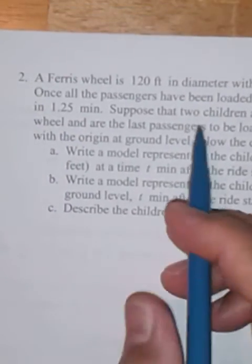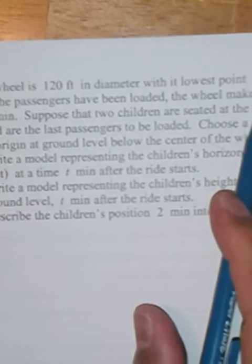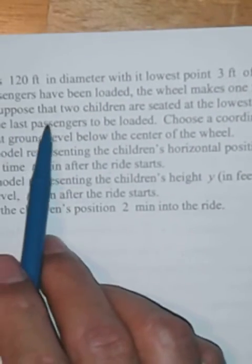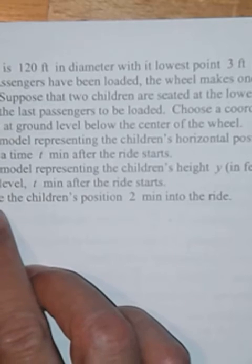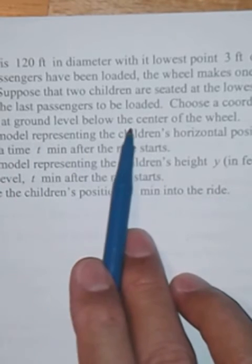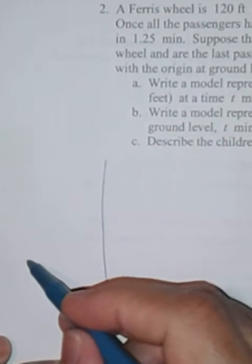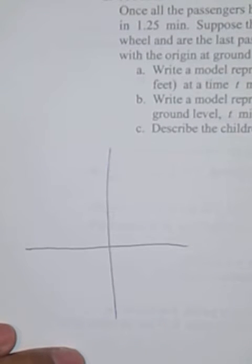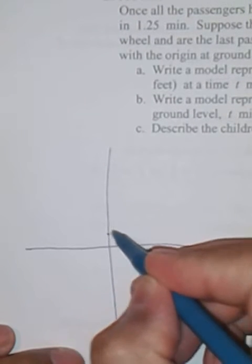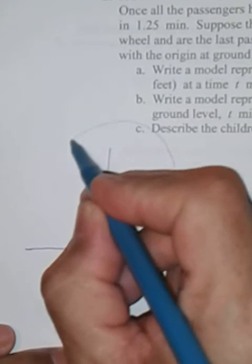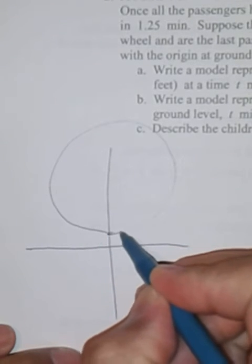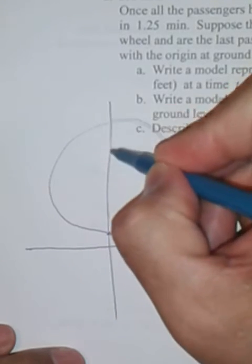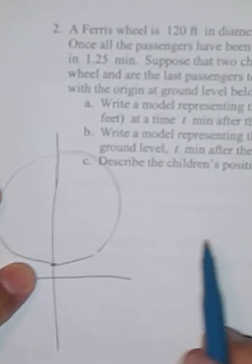The second one, number two, says we have a Ferris wheel, 120 feet in diameter with its lowest point three feet above the ground. Once all the passengers have been loaded, the wheel makes one full rotation in 1.25 minutes. Suppose that two children are seated at the lowest point on the wheel and are the last passengers to be loaded. Choose a coordinate system with the origin at ground level below the center of the wheel. So what they're telling us is, or the idea is that we want to think of it this way. There's my XY plane. My Ferris wheel is three feet above, like so.